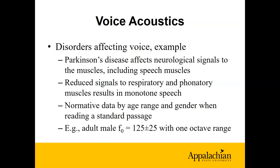Part of the study of communication disorders is knowing what normal looks like. We have normative data for what phonation should look like based on age and gender, from things like reading a standard passage. For example, an adult male fundamental frequency is usually around 125 Hz, plus or minus 25 Hz, and the variation while reading a standard passage is about one octave — a musical term for a doubling of frequency — from a low value to double that low value as a typical range.